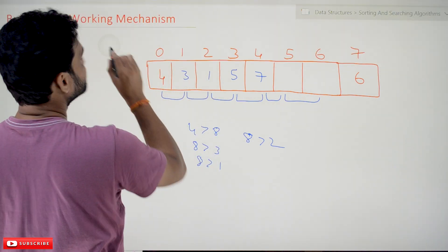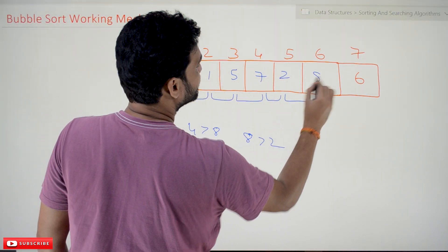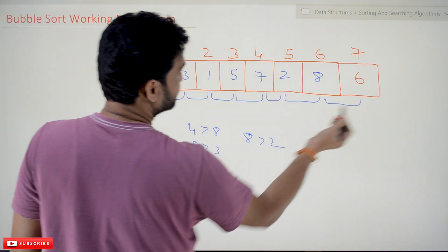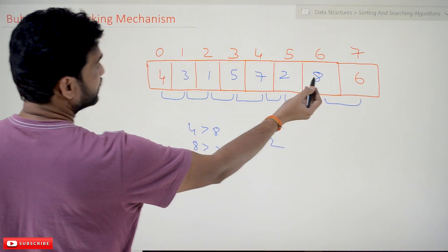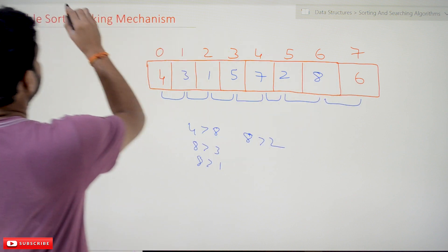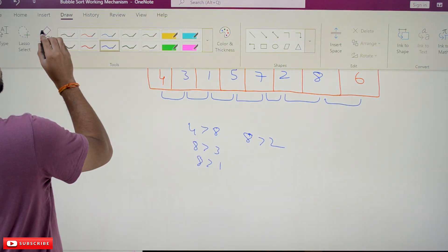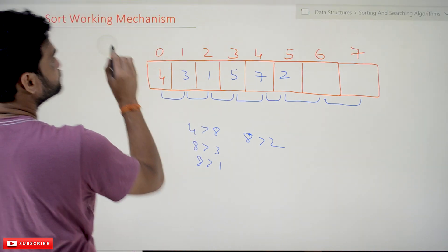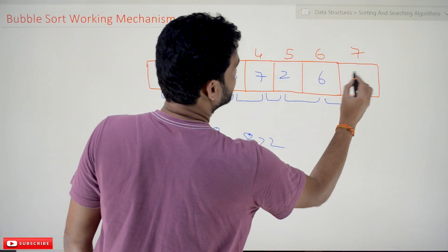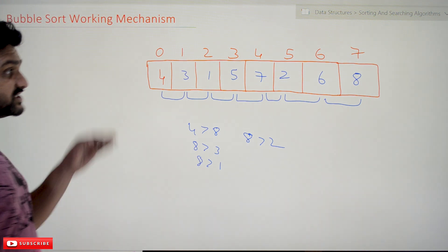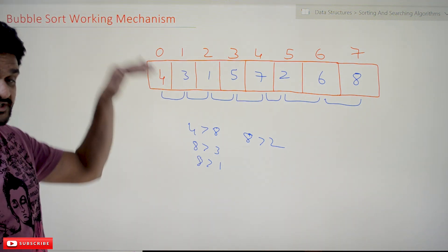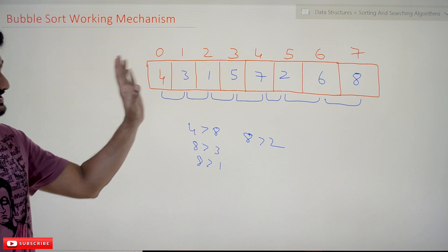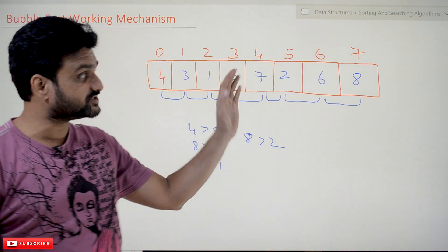8 and 2 are compared — is 8 greater than 2? Yes, so these two get swapped; 2 comes here and 8 moves forward. Then 8 and 6 are compared and get swapped again; 6 comes here and 8 is at the end. This completes the first iteration. The largest element, 8, has been shifted to its sorted position at the end of the array.